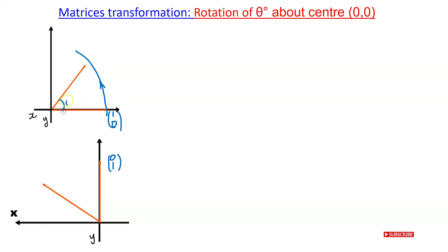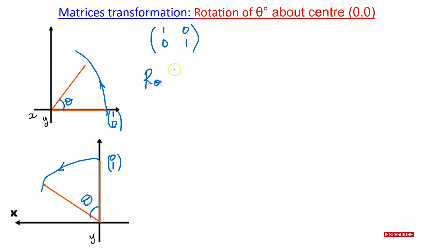So what we're saying is we're rotating this vector here in that direction and it is now placed here. That's the angle theta there. Similarly, we rotate this other vector in the anti-clockwise direction by theta degrees. So let's start by writing these two vectors as a matrix — we have (1, 0) and (0, 1). After the rotation at theta degrees anti-clockwise, we apply R(θ) to the matrix. What do we get? Where this unit vector is now here — what will be the position for this vector?